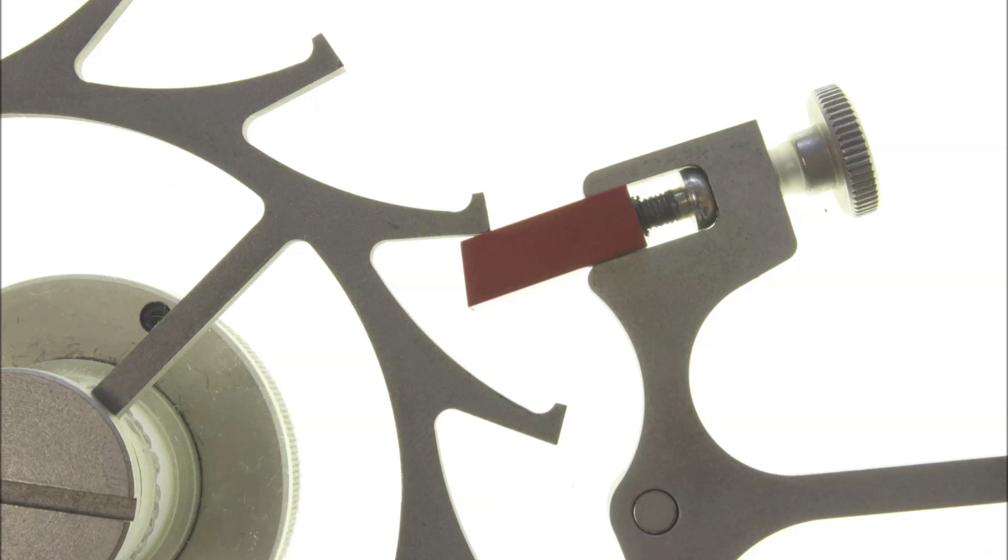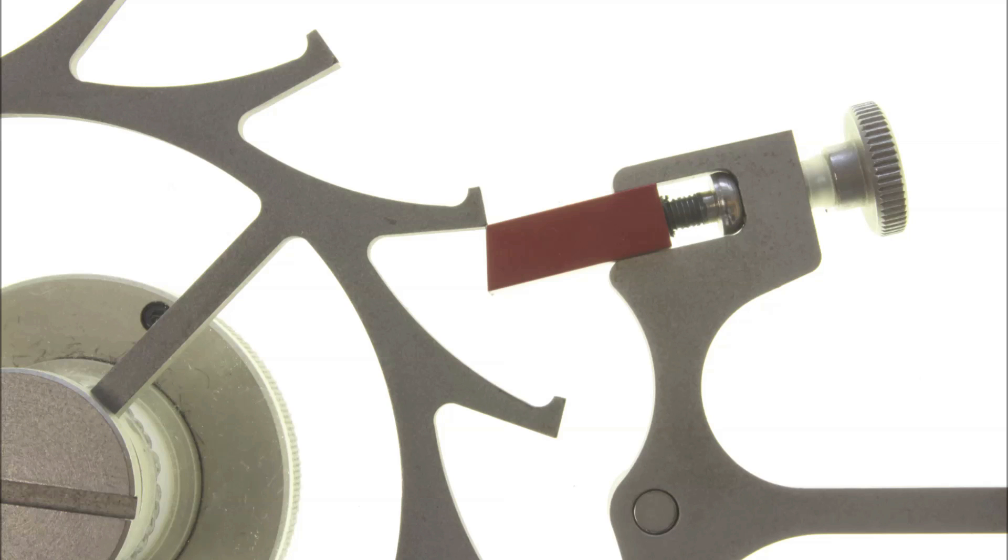Geometric recoil ends at the point where the locking beaks of the pallet and escape wheel tooth break contact. The momentum of the escape wheel continues to keep it recoiling for a moment after the pallet and escape wheel tooth break contact.